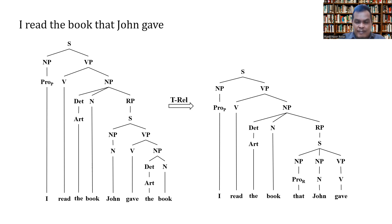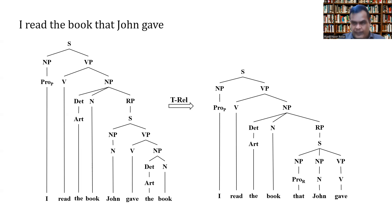Remember, when you analyze a sentence that contains an adjective clause, your analysis must show the transformation, indicated by two kinds of diagram. The first diagram represents the deep structure of the sentence, and the second diagram represents the surface structure. I hope you can understand this — see you in the next video.